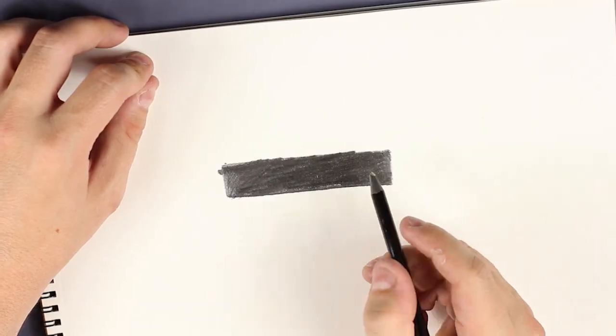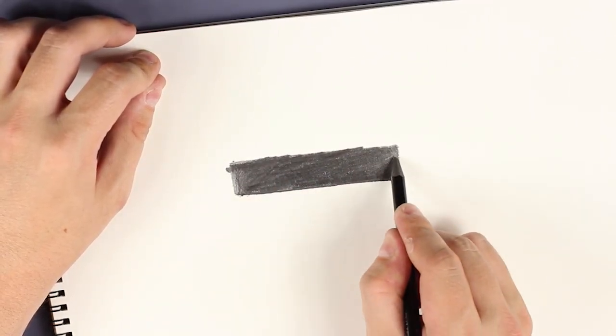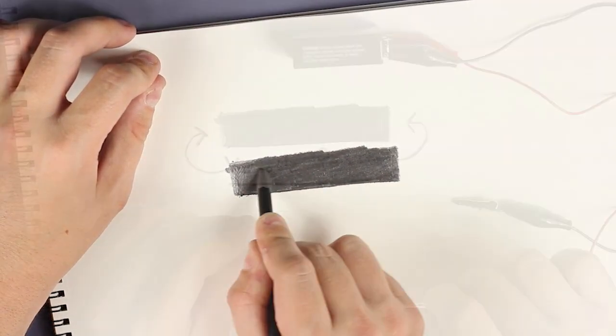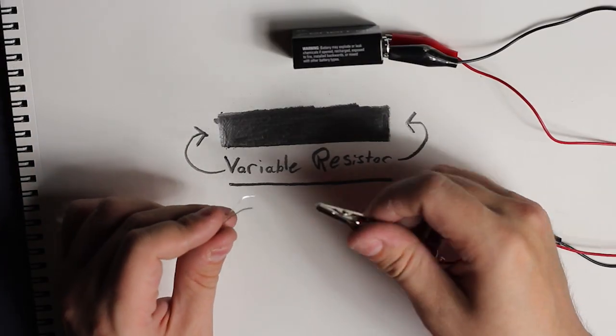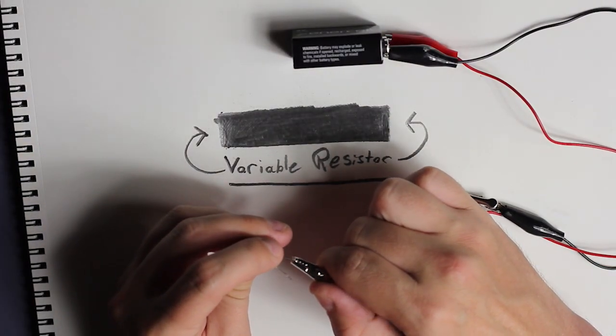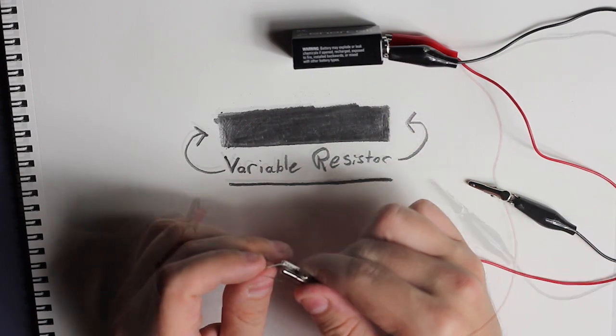And as you may or may not know, a resistor basically restricts the flow of electrical current. Graphite itself is a pretty terrible conductor of electricity, but it will carry just enough to light up an LED when the source is a 9-volt battery.